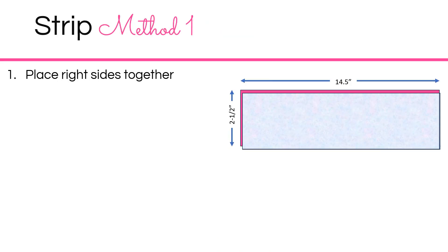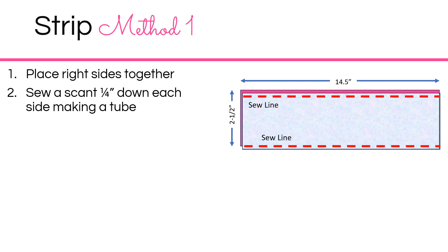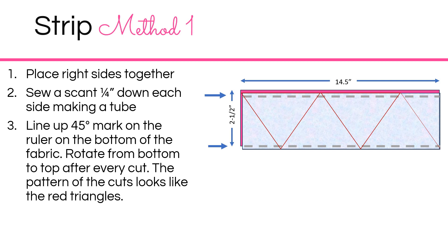Strip method one requires you to take two strips, lay them face down, right sides together, and sew a scant quarter of an inch on the top and the bottom of the strips. Then you're going to use a 45-degree ruler lined up at the bottom to cut your first strip, and then rotate that ruler from the top to the bottom as you go cutting those strips.